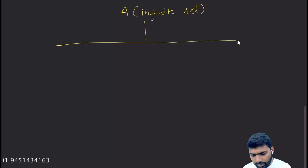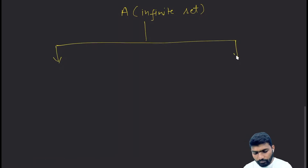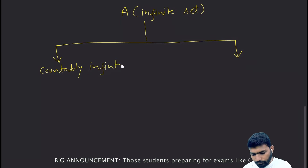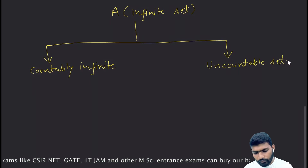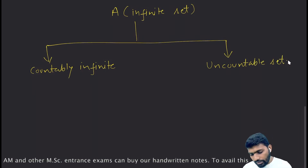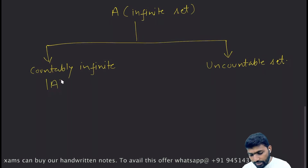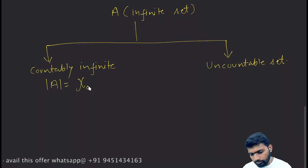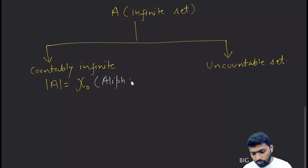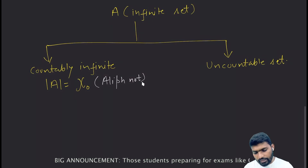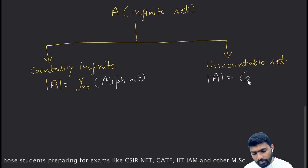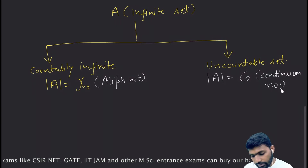There can be two types of infinite sets. The first one is countably infinite, and the second one is uncountable. The cardinality of a countably infinite set is denoted by aleph-null (ℵ₀), and the cardinality of an uncountable set is denoted by the continuum number.